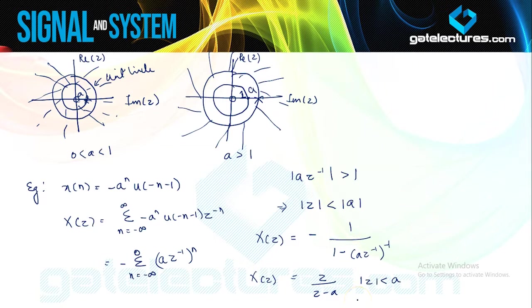When we have different ROCs, we have different signals. Different signals may have the same expression for Z-transform. Therefore, without the ROC, we cannot define the Z-transform — we cannot talk about Z-transform without specifying the ROC. Otherwise it is an incomplete definition, because two different sequences may have identical Z-transform expressions except for their ROCs.